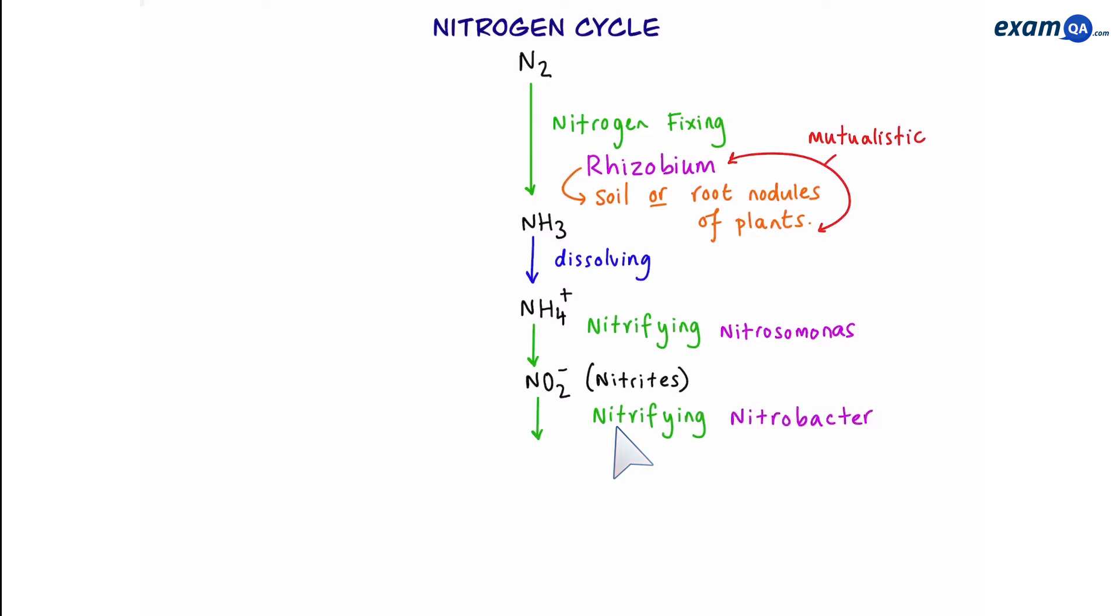One more nitrifying bacteria such as nitrobacter then converts the nitrites into nitrates. Perfect. All that hard work and finally we have nitrate ions.